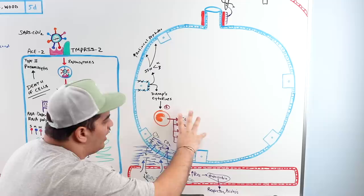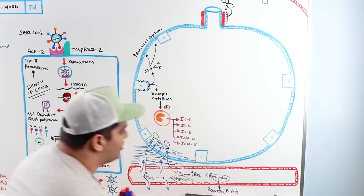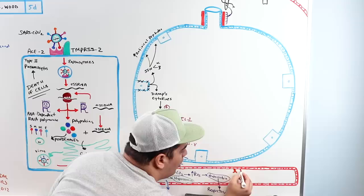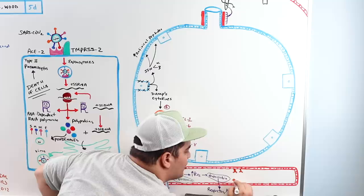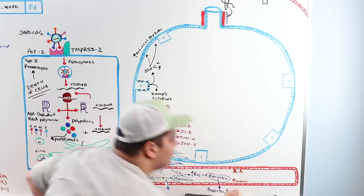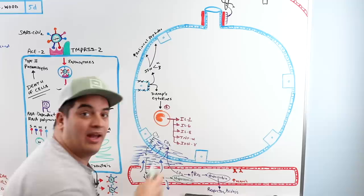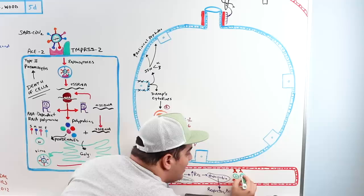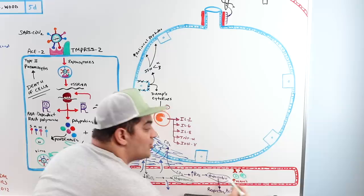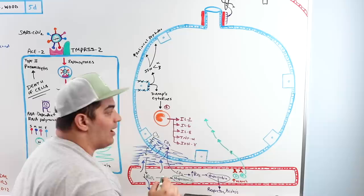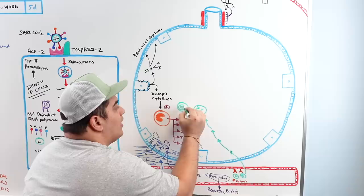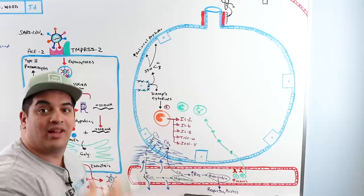The inflammatory cytokines also increase expression of vascular cell adhesion molecules (VCAMs) on the endothelium. This recruits white blood cells — particularly neutrophils and more macrophages — from circulation into the inflamed area, perpetuating the inflammatory response.